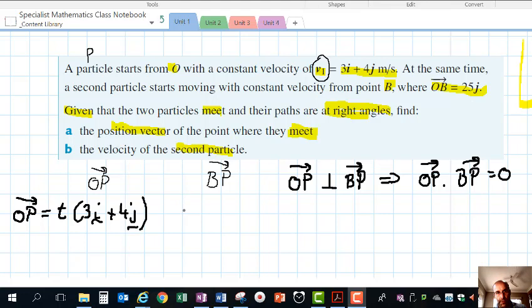As per the previous example, for position vector OP we can go t times the given velocity vector, which would be that. With t being a scalar, we can write 3t·i + 4t·j.